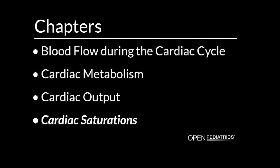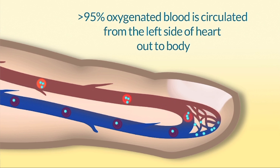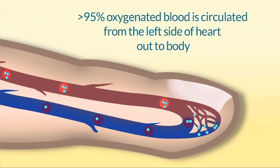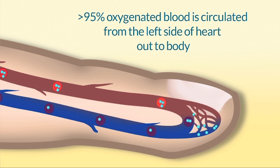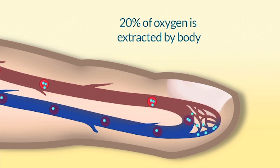In the normal heart, greater than 95% oxygenated blood is circulated from the left side of the heart out to the body. A little more than 20% of oxygen is extracted by the body.